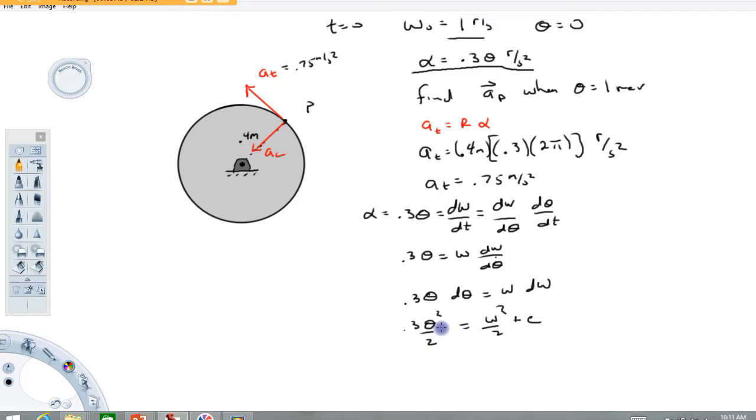That's going to equal omega squared over 2 plus a constant. Now, when theta is equal to 0, we know that the angular velocity is 1 rad per second. So when we apply that condition, this is now going to read 0 equals 1 squared over 2 plus a constant. So our constant is equal to minus 1 half here.